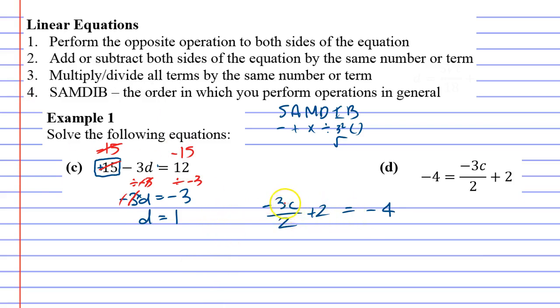Now, we have some multiplication, division, and addition. So we should always do addition before multiplication and division, and we're going to do the opposite. We're going to minus 2 on both sides, which cancels the positive 2.